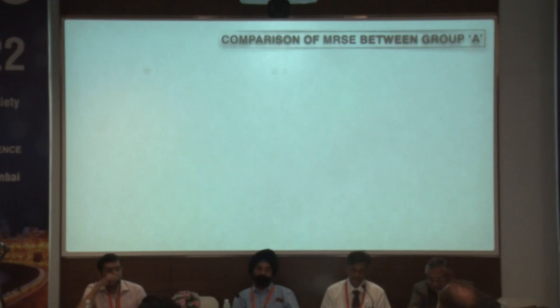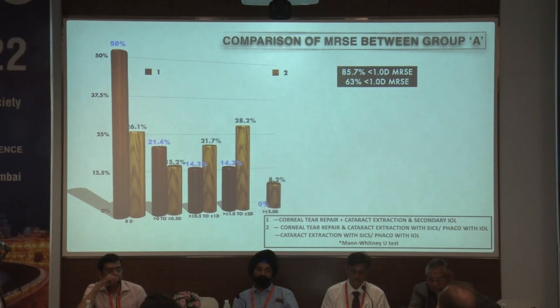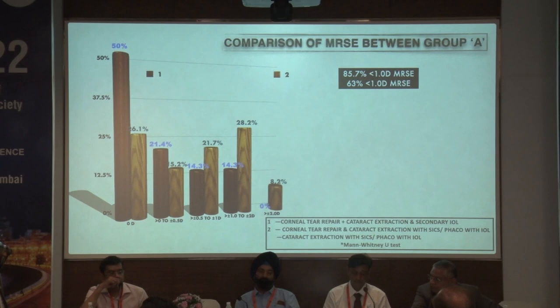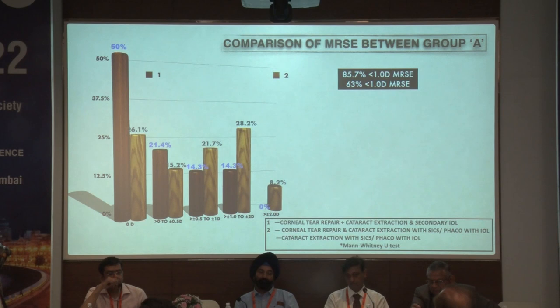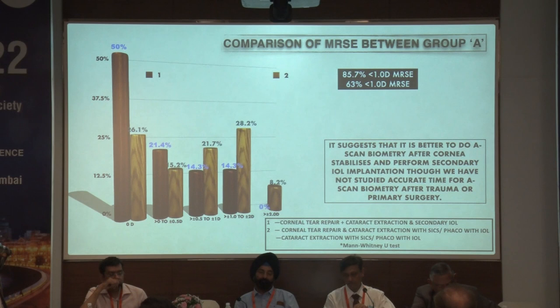Comparing MRSE between group A subgroups: 85.7% of patients with secondarily implanted IOL achieved MRSE of less than 1 diopter, while only 63% of patients with primarily implanted IOL achieved less than 1 diopter of MRSE. None of the patients with secondary IOL implantation had more than 2 diopters of MRSE. This suggests it is better to perform A-scan biometry after the cornea stabilizes and perform secondary IOL implantation, though the exact timing was not studied.